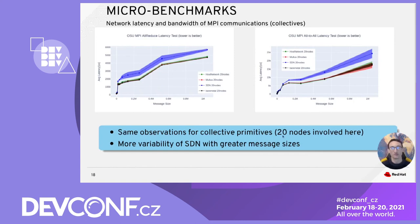We also looked at MPI collective operations. Again, we see the SDN is clearly above the rest. But for small message sizes, the network type doesn't really matter. The collective primitives were executed with 20 nodes involved.